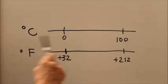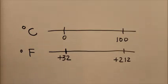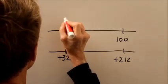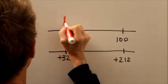On the Celsius scale, zero degrees represents the freezing point of water at sea level on the earth.